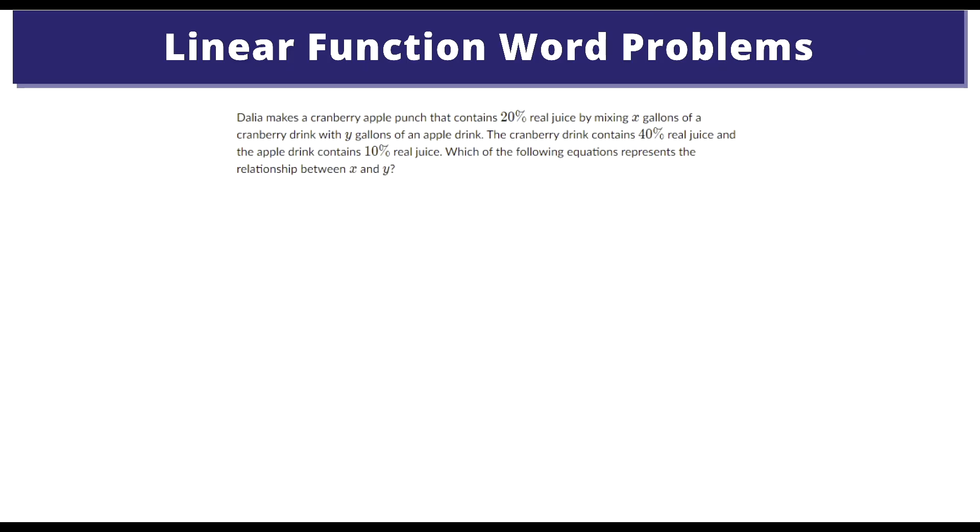Question 1. Dahlia makes a cranberry apple punch that contains 20% real juice by mixing x gallons of cranberry drink with y gallons of apple drink. The cranberry drink contains 40% real juice, and the apple drink contains 10% real juice. Which of the following equations represents the relationship between x and y?